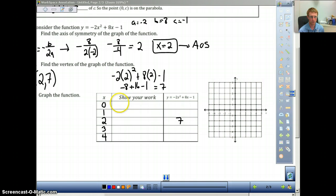Plug in 0. So, negative 2 times 0 squared plus 8 times 0 minus 1. You can put that right into a calculator. That's negative 8 plus 0, or sorry, 0 plus 0 minus 1 is negative 1. So, we have 0 comma negative 1 is one of our values.